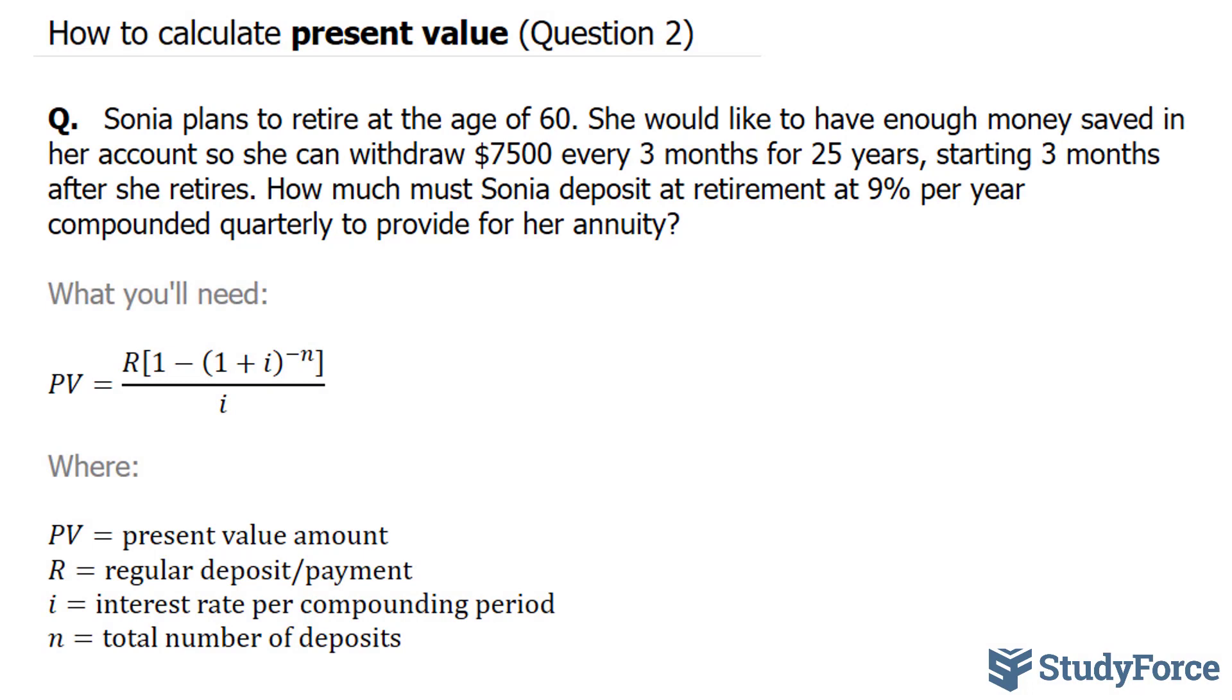What we are looking for here is present value. We want to know how much Sonia has to put in at her retirement so that she can comfortably withdraw $7,500 every 3 months for her livelihood. So let's write down everything we know.